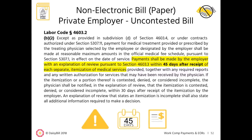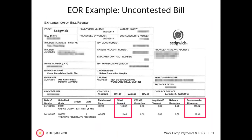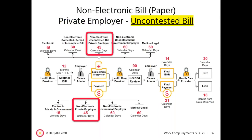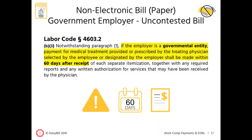Per Labor Code 4603.2, a non-electronic uncontested bill requires an EOR and payment within 45 days for private employers. An uncontested bill means the bill reimbursement is precisely the same amount as the bill charges. If the bill is sent on paper, the employer is a private employer, and the bill is uncontested, the claims administrator must send the EOR with the payment within 45 calendar days of receipt. For government employers, an uncontested bill requires an EOR and payment within 60 days.